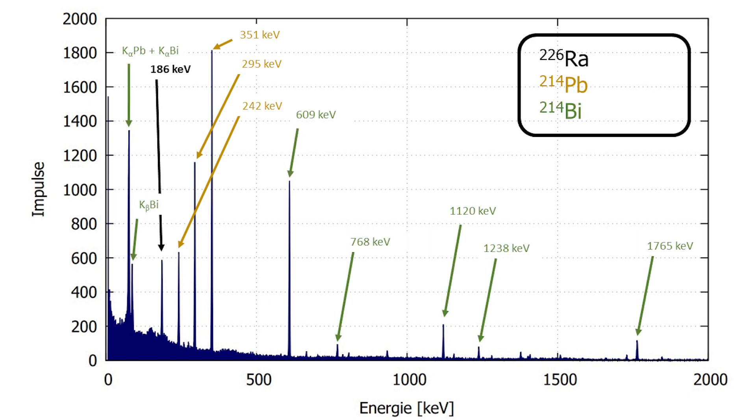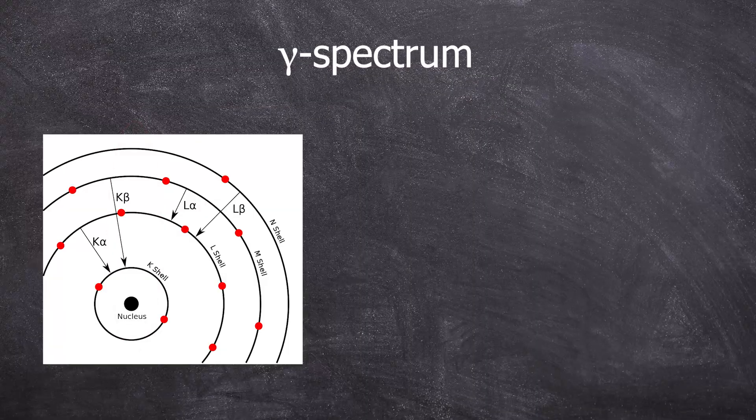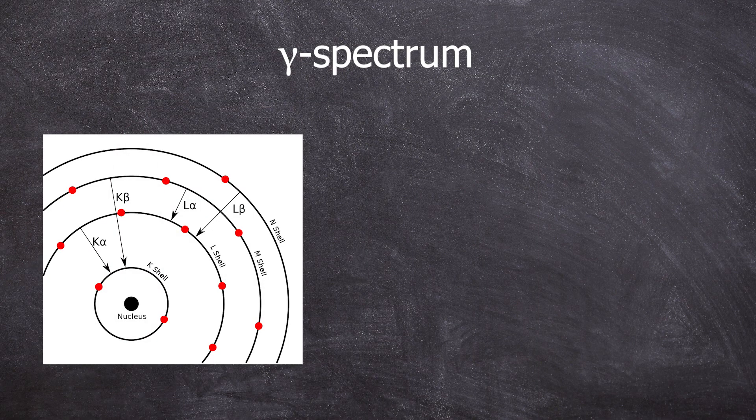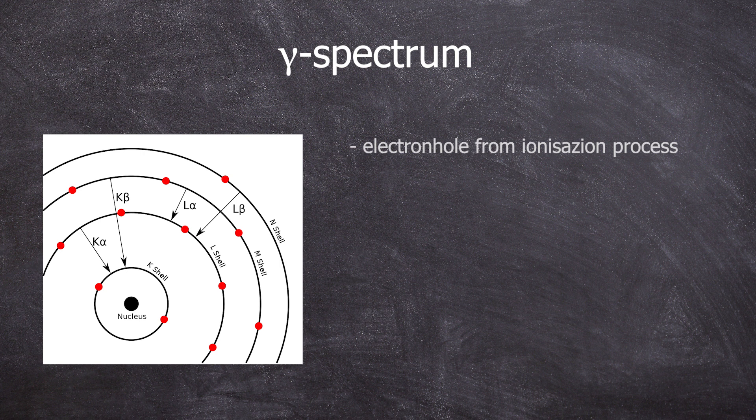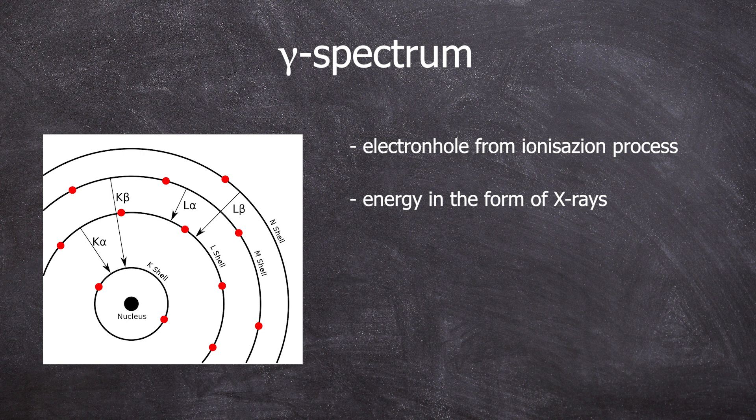Now here is something new. You can observe the X-ray fluorescence region in the low-energy part of the gamma spectrum. For extremely heavy nuclei, as in most radioactive substances, the transition into an electron hole in the K-shell can be energetically high enough for the resulting X-ray to appear in the gamma spectrum.